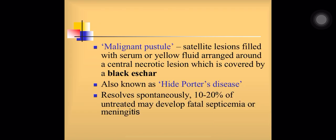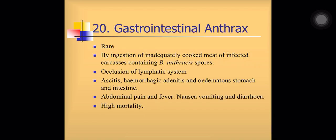In malignant pustule, black scar formation takes place with fluid-filled vesicles containing serum or yellow fluid arranged around a central necrotic lesion. It may resolve spontaneously, but untreated cases may develop fatal septicemia or meningitis. Gastrointestinal anthrax is rare. It occurs by ingestion of inadequately cooked food containing Bacillus anthracis spores. It may lead to occlusion of the lymphatic system, ascites, hemorrhagic adenitis, and edematous stomach and intestine, with abdominal pain, fever, nausea, vomiting, diarrhea, and high mortality.